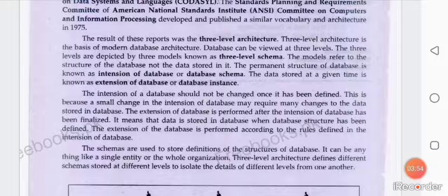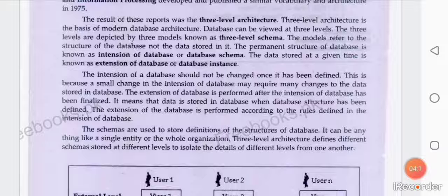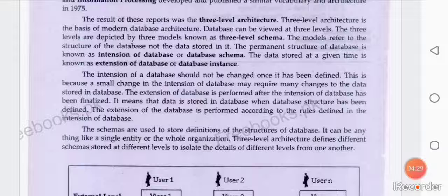The extension of the database is performed after the intension has been finalized. Until the structure is finalized, we cannot perform extension — meaning we cannot store data. The extension of the database follows the rules defined in the intension of the database. According to those rules, we can insert and store data. Extension of data follows the rules of intension of data.